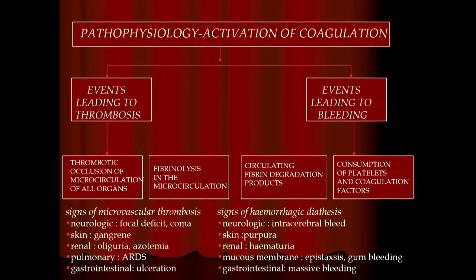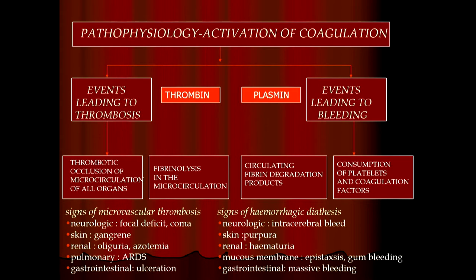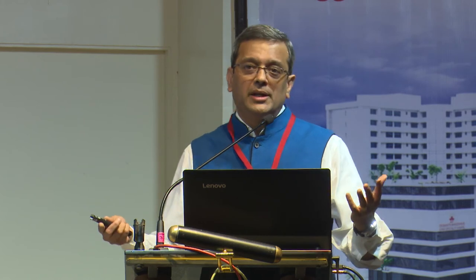Looking at the pathophysiology of DIC, two events take place in the patient depending on whether thrombin or plasmin is dominant. The moment more thrombin is formed, it starts acting on fibrinogen, cuts it to fibrin, and starts forming clots — that's the thrombotic version, or thrombotic occlusion. Plasmin causes secondary fibrinolysis to cut the clot to size and prevent its extension. But when this process loses control and becomes disseminated, it's a very complex pathophysiology of two proteins — thrombin and plasmin. Each septic patient is at risk, but if the innate immunity can handle it, they don't go to DIC.